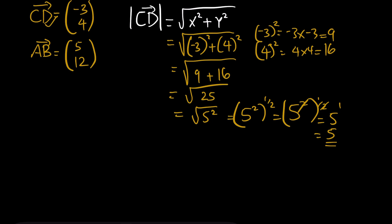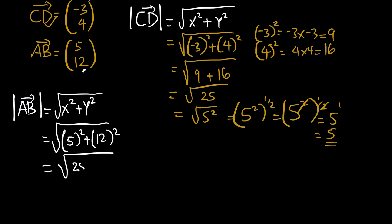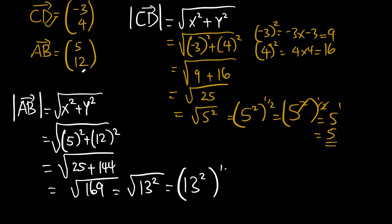For the magnitude of vector AB, same formula: square root of x-squared plus y-squared. The x-component is 5 squared and the y-component is 12 squared, giving square root of 25 plus 144, which is square root of 169. That's square root of 13 squared, equal to 13 squared to the power of half, and the two cancels, giving us 13.